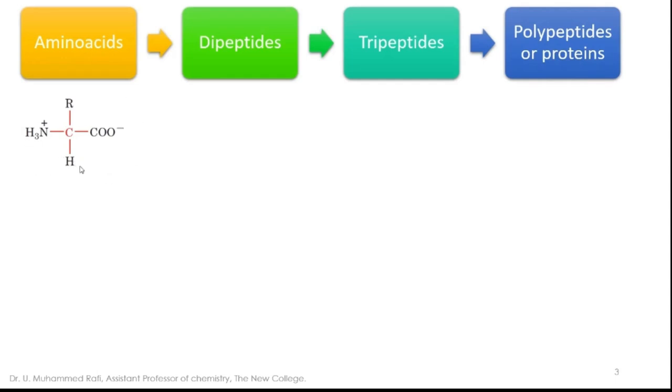We have amino acids, and depending upon this R group, it can be an alkyl group or any aromatic group or it can also be a hydrogen. We have many types of amino acids like polar, non-polar, acidic, basic, and neutral amino acids. So we can classify amino acids in that way.